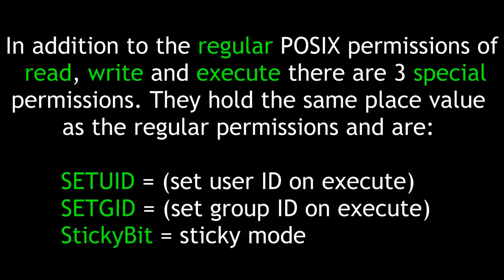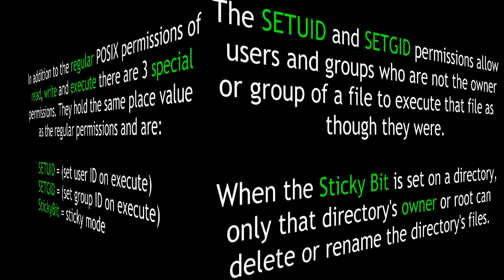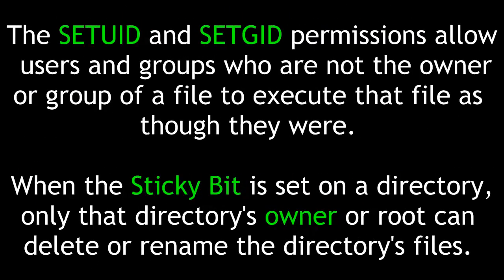In addition to the regular POSIX permissions of read, write, and execute, there are three special permissions: set UID, which sets the user ID on execute; set GID, which sets the group ID on execute; and the sticky bit, which puts the directory in sticky mode. Set UID and set GID allow users and groups who are not the owner to execute a file as though they were. When the sticky bit is set on a directory, only that directory's owner or root can delete or rename files within it.